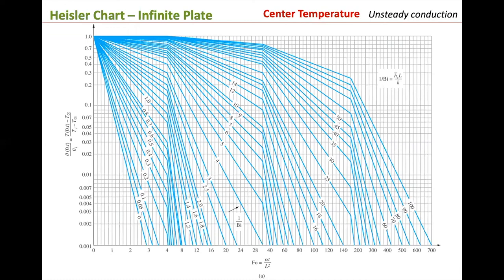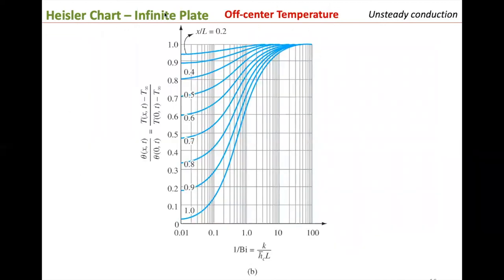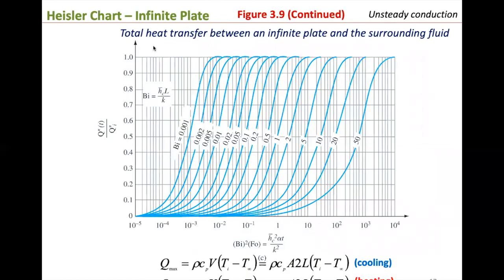There are three plots per geometry in the Heisler charts: one for center temperature, one for off-center temperature, and one for total heat transfer between the geometry and the surrounding fluid. For example, the infinite plate charts are Figure 3.9 in your textbook. A very common mistake is reading the chart for the wrong geometry — if you use the cylinder chart for a plate problem, the answer will be completely wrong. Always double- and triple-check that you are using the right plot for the right geometry.